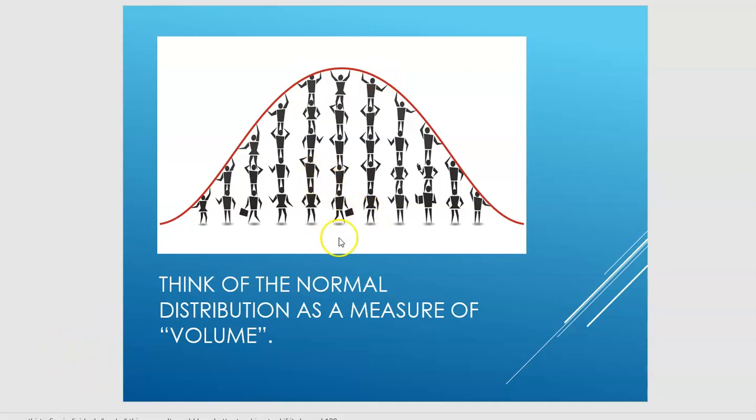So one of the things that this indicates to us is that as an individual score gets, as scores get closer either to the outside, the high outside, or the low outside, there are proportionally fewer and fewer people who get that set of scores.